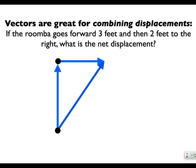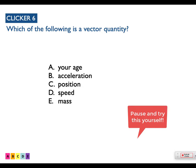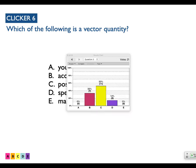Let's do a clicker question: what is a vector quantity? Which things have direction? So we think acceleration, position, and speed are all maybe vectors. Let's discuss this and we'll vote again.